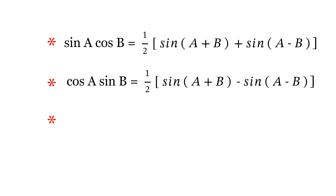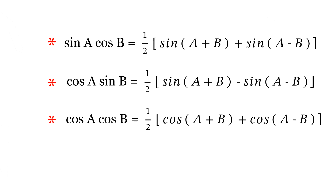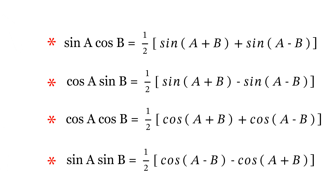The next formula: cos(A)·cos(B) equals half of [cos(A+B) plus cos(A−B)]. And the next formula: sine(A)·sine(B) equals half of [cos(A−B) minus cos(A+B)].